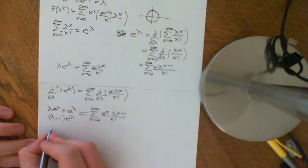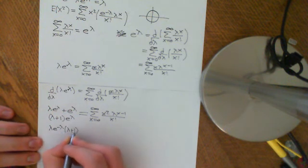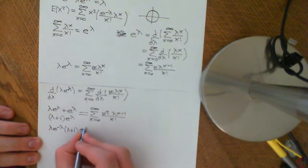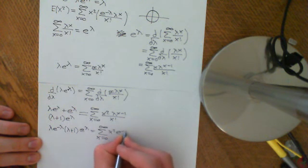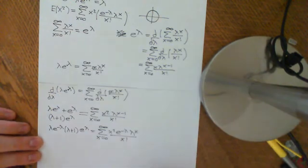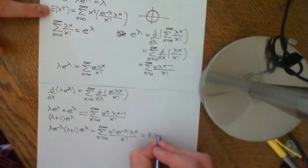The original series we wanted is back up here. What we have so far has x squared lambda to the x minus 1. All we need to do is multiply both sides by lambda e to the negative lambda. On the right side, we get the sum from x equals 0 to infinity of x squared e to the negative lambda times lambda to the x over x factorial — which is exactly the series we wanted — and this equals E[X²].